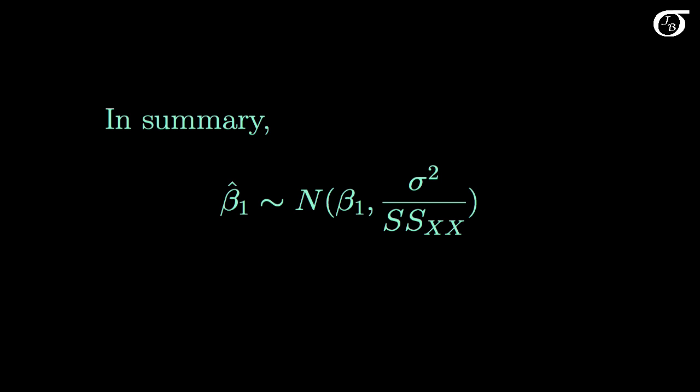Bringing these notions together, we know that beta 1 hat is a normally distributed random variable with a mean of beta 1 and a variance equal to sigma squared over the sum of squares for x. Sigma squared is a parameter which represents the true variability of y at any given value of x. And as is usually the case with parameters, we don't know its value, so the first step is going to be estimating sigma squared.